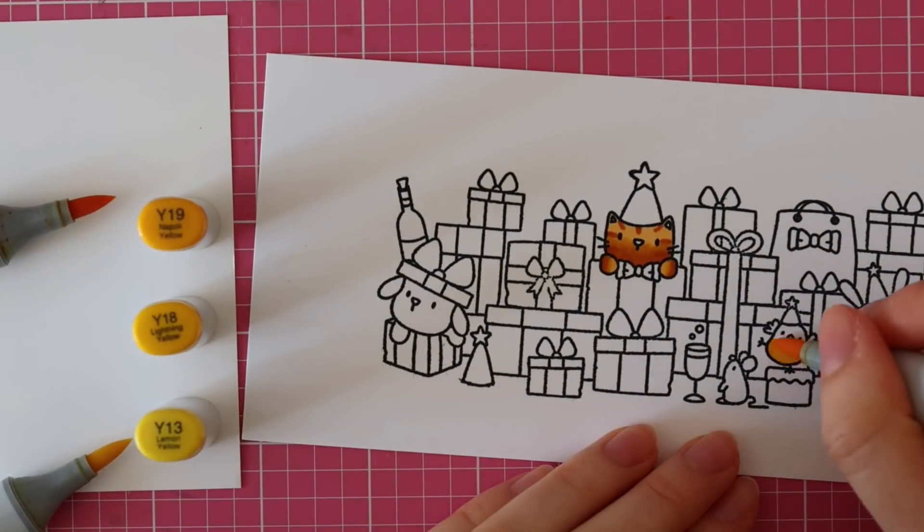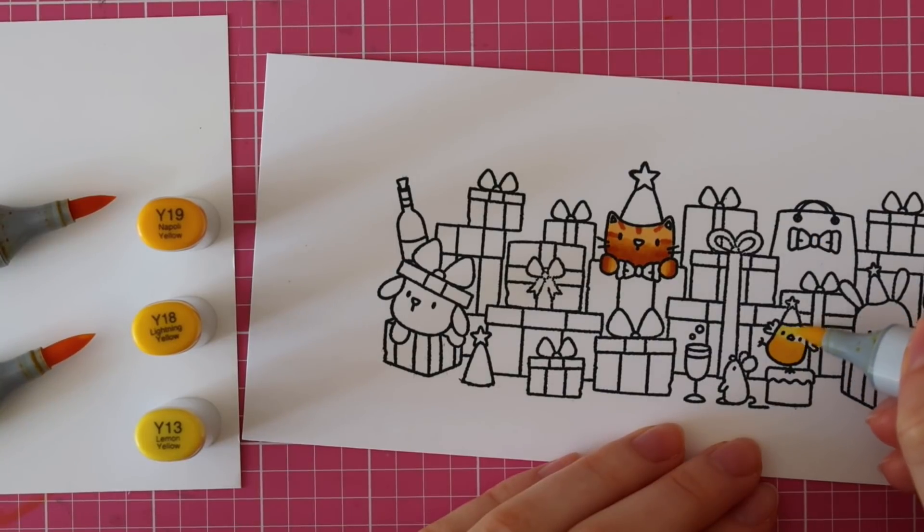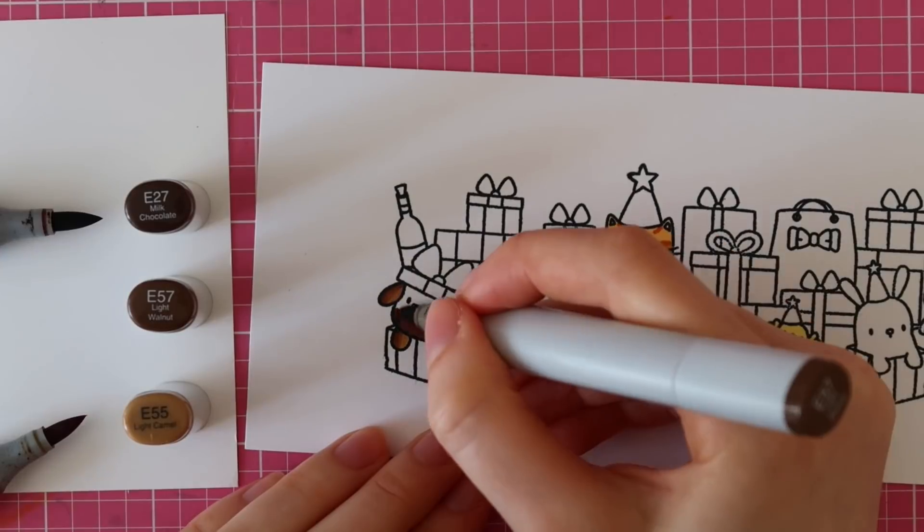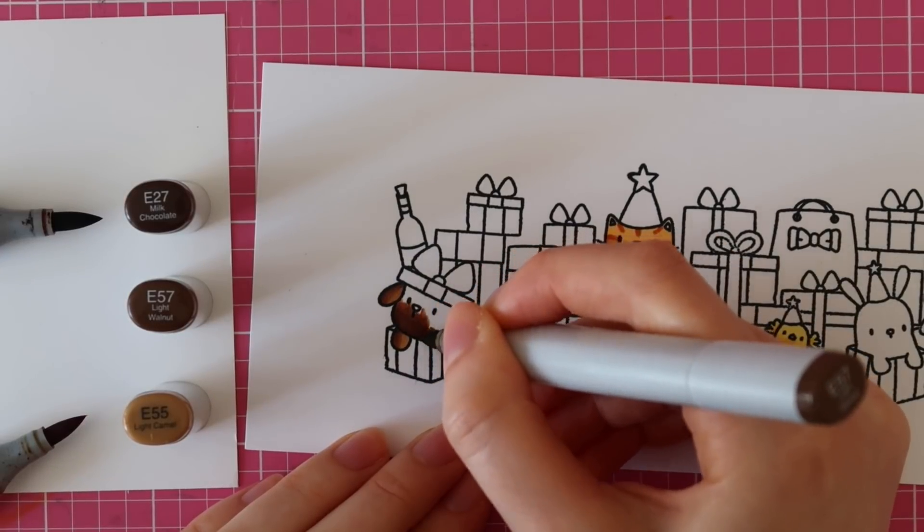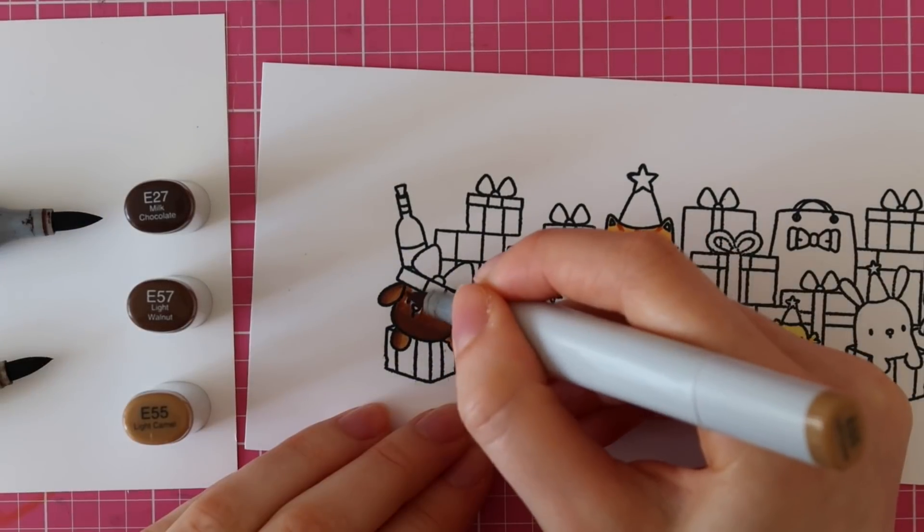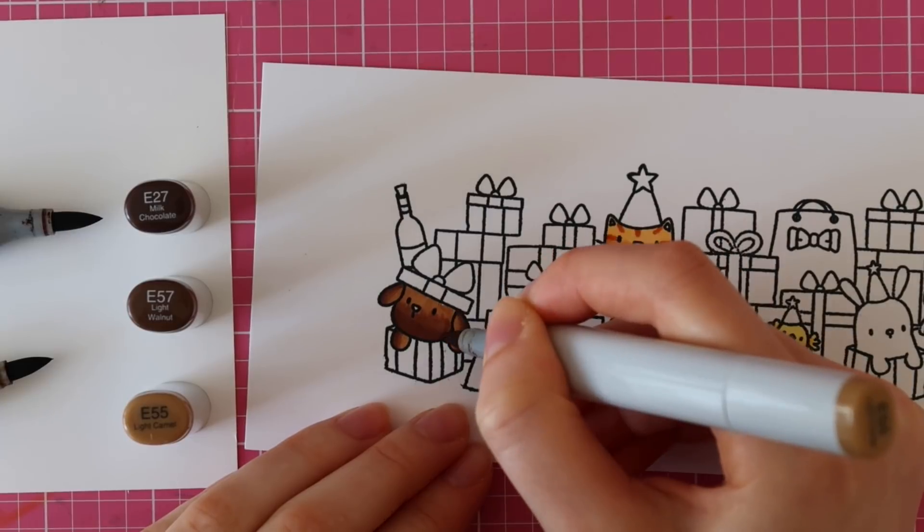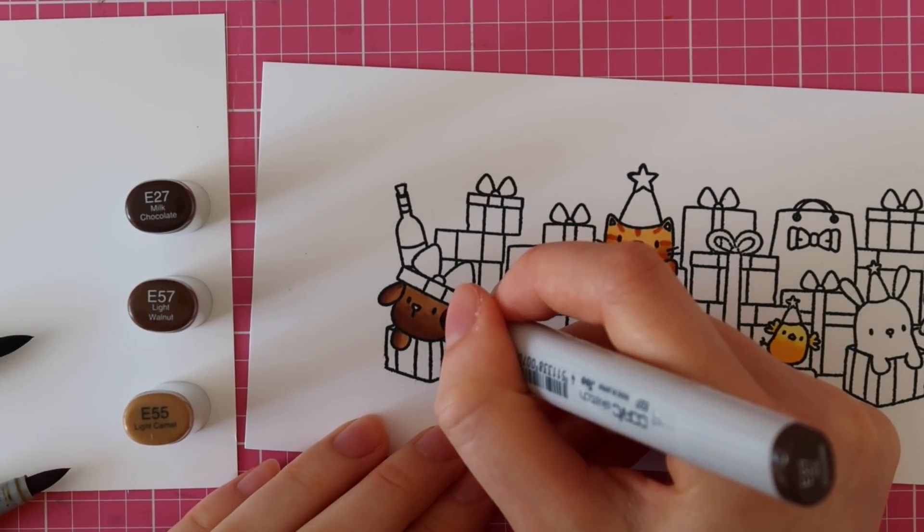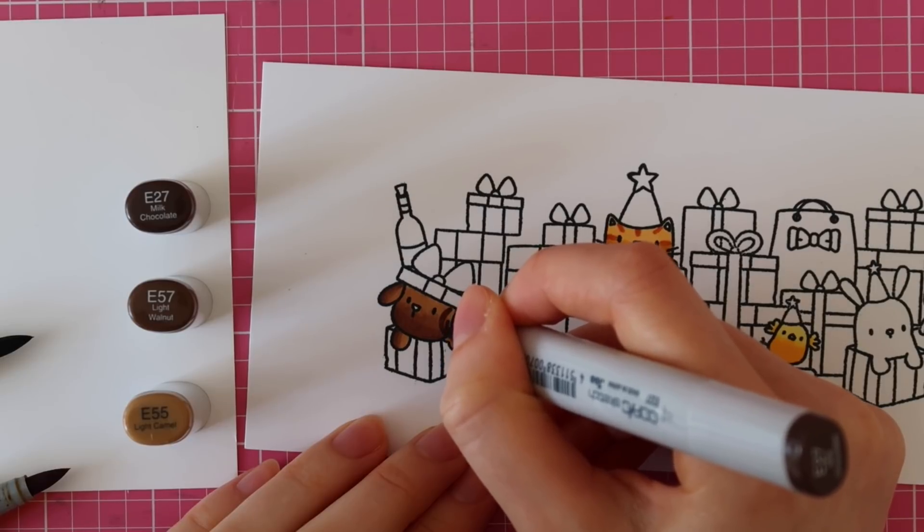So I just colored that cat using YR27, YR24 and YR21. And then for this adorable little bird, I used Y19, Y18 and Y13. For this dog, I'm going to use some shades of brown. I'm using E27, E57 and E55.